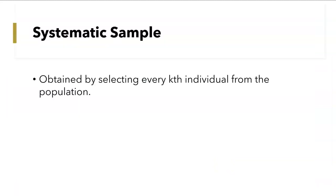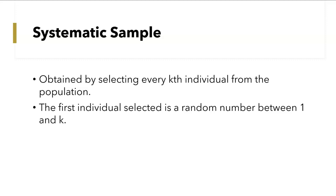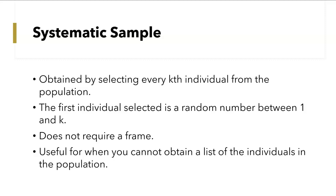The next type of sample is systematic sample. This is obtained by selecting every Kth individual from the population. The first individual selected is a random number between 1 and K, so you don't start with the first person. This does not require a frame — remember, a frame is where you have to list out every individual in the population. Systematic sample does not require a frame, which is useful when you cannot obtain a list of the individuals in the population.